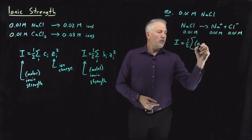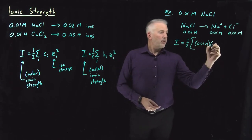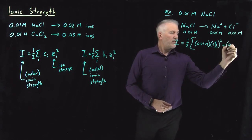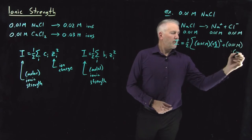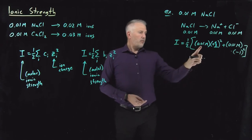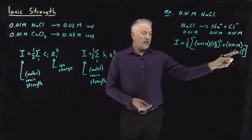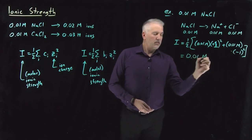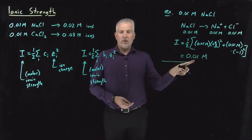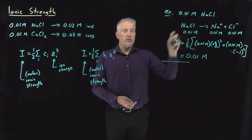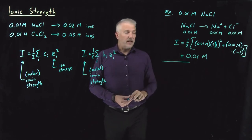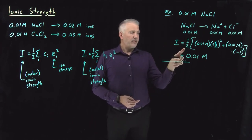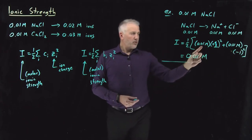For sodium, the concentration is 0.01 molar and the charge is +1, so the contribution is 0.01 × (1)². For chloride, the concentration is 0.01 molar and the charge is −1, giving 0.01 × (−1)². Adding those: 0.01 + 0.01 = 0.02, and the ionic strength is one-half of 0.02, which equals 0.01 molar. Notice the ionic strength, 0.01 molar, is exactly the same as the nominal concentration of sodium chloride. For a one-to-one salt, ionic strength always equals the nominal concentration — the one-half accounts for the cation and anion being added together.